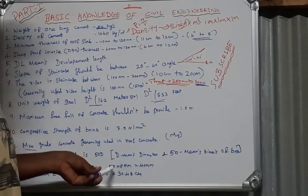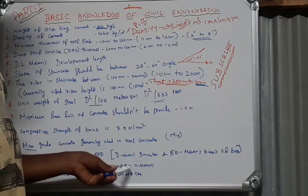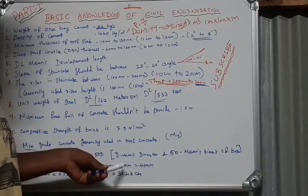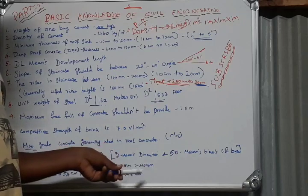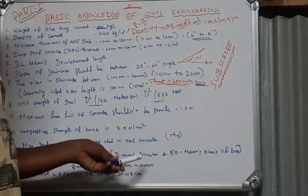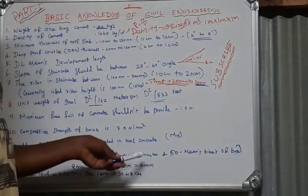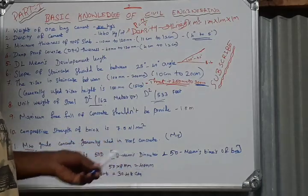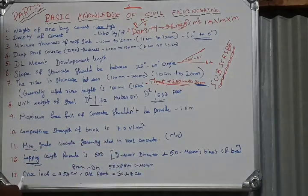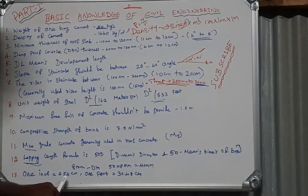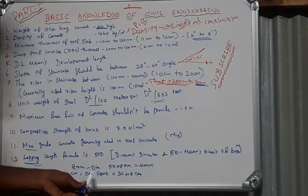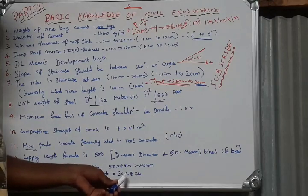For example, 50 times 8 mm rod: the diameter is 50 times. If it's 40 mm, it's less than 40 mm. For example, last 10 mm: 1 inch is 2.5 cm, 1 feet is 4.8 cm.